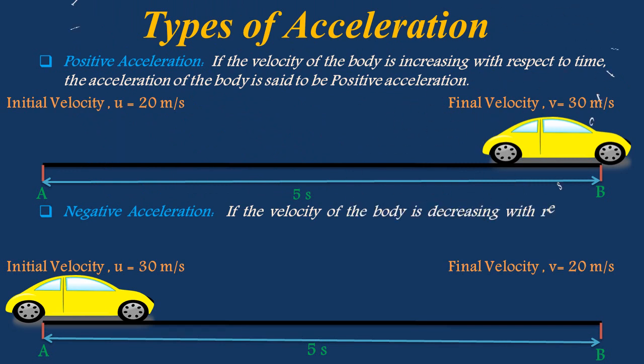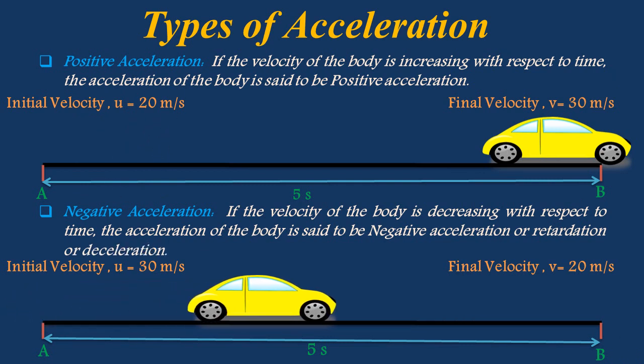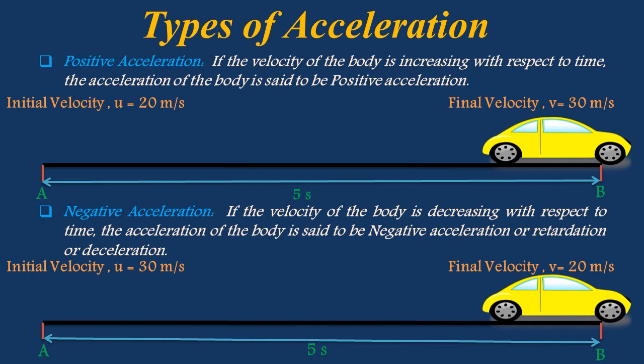If the velocity of the body is decreasing with respect to time, the acceleration of the body is said to be negative acceleration, or retardation, or deceleration. Consider a car moving initially with a velocity of 30 meter per second that takes 5 seconds to reach the final point with a final velocity of 20 meter per second. Then acceleration is said to be negative acceleration, as there is a decrease in velocity from 30 meter per second to 20 meter per second.